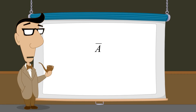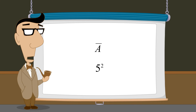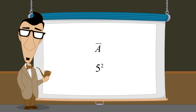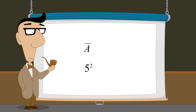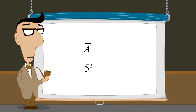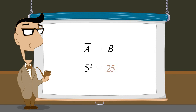Forming a set's complement is a unary set operation, in the same way that squaring a number is a unary numerical operation. Unary operations involve only one operand. The result of this set operation is another set, just as the result of a numerical operation is another number.